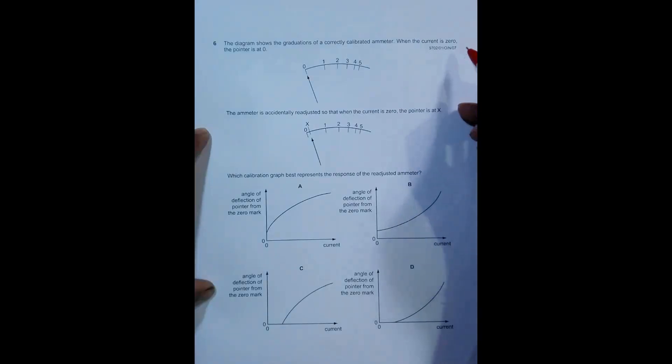Hello folks, this is 2007 October paper one, question number six. It says that the diagram shows the graduations of a correctly calibrated ammeter.